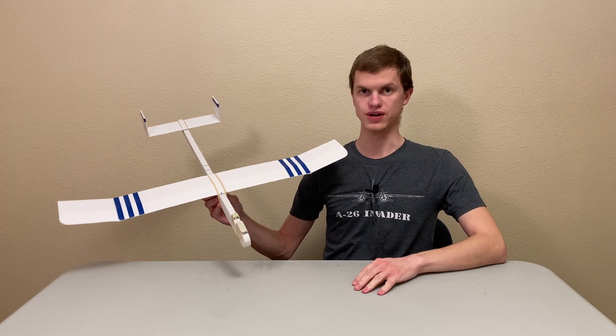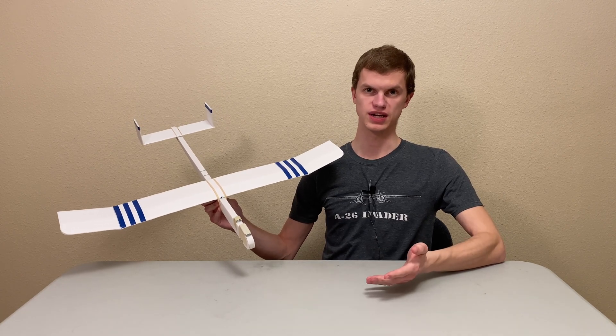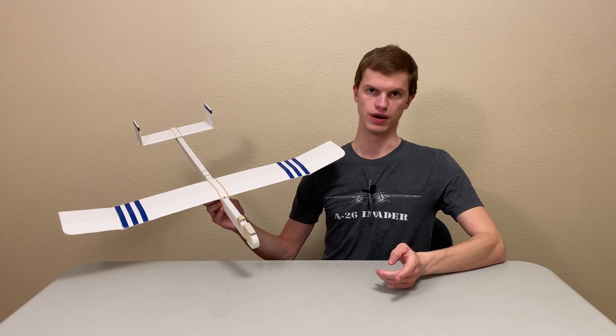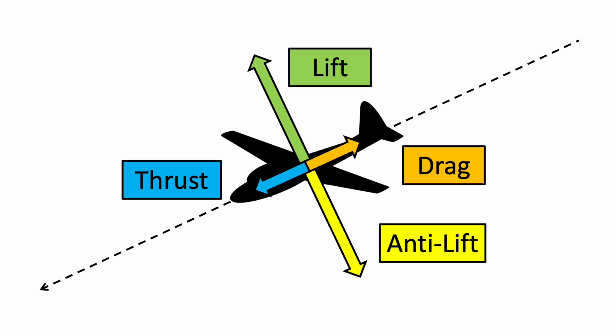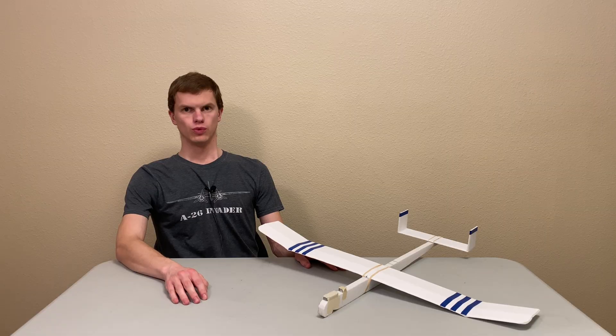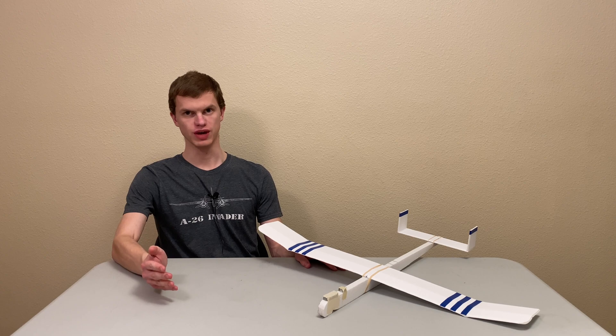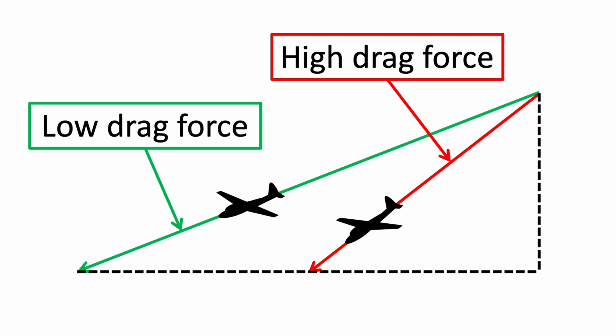In our last video we learned how to build this simple and inexpensive glider that you can use to experiment with different airplane designs. In our second-to-last video we discussed basic glider physics and learned that drag is a force that acts on our planes in the opposite direction they're flying. We also learned that to maximize the distance your glider flies, you need to maximize the ratio of lift force to drag force, which means minimizing the drag force.